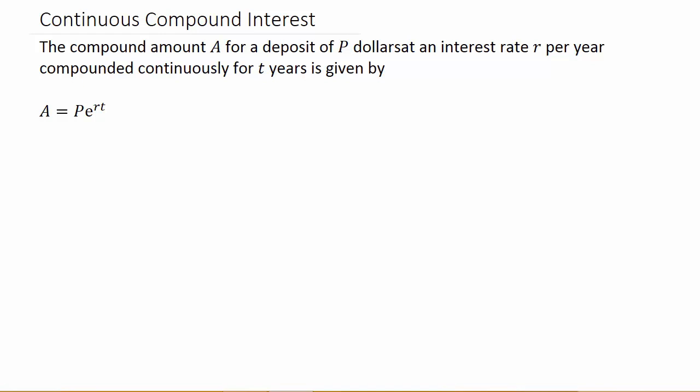The compound amount A for a deposit of P dollars at an interest rate R per year compounded continuously for T years is given by A equals P times E raised to the RT.